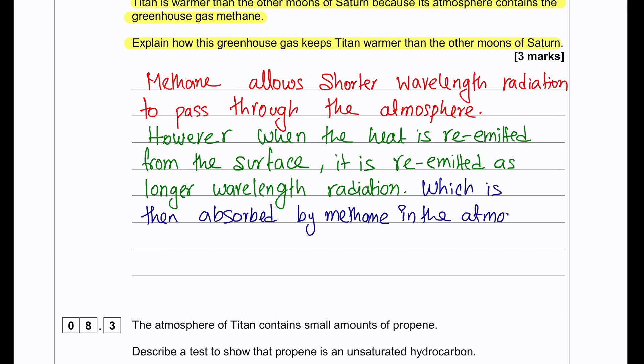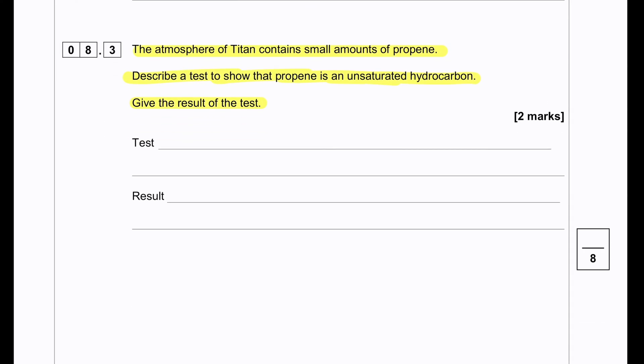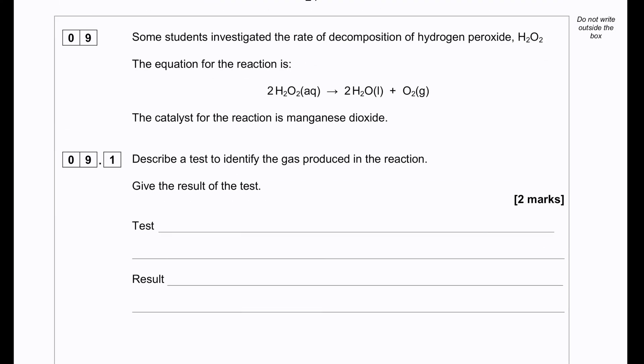The atmosphere of Titan contains small amounts of propene. Describe a test to show that propene is an unsaturated hydrocarbon and give the result of the test. If we want to check the propene carbon-carbon double bond, we will have to test it with bromine water. So the test will be addition of bromine water, and the result would be the color will change from orange to colorless.